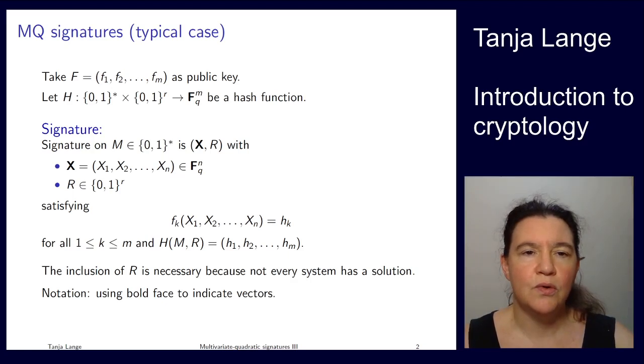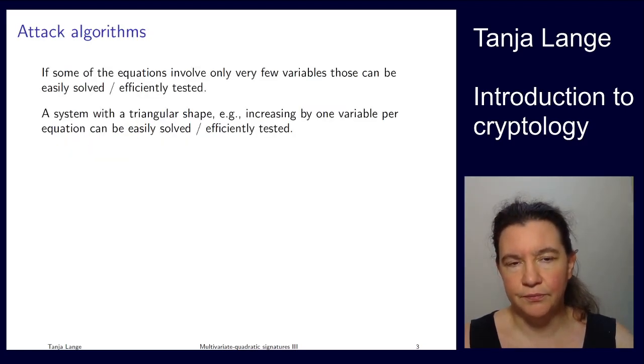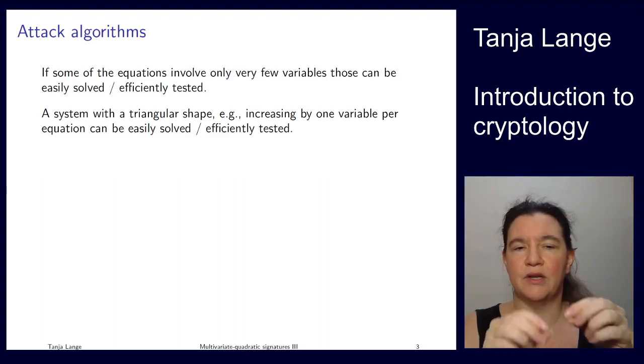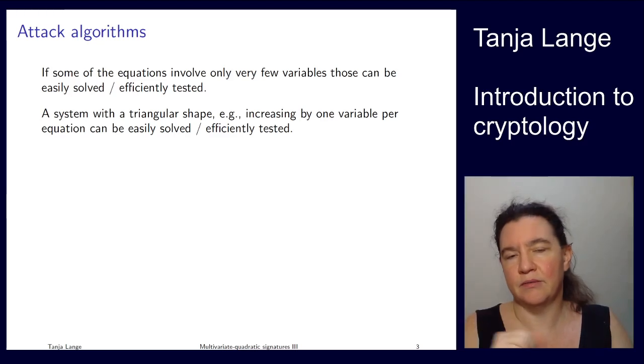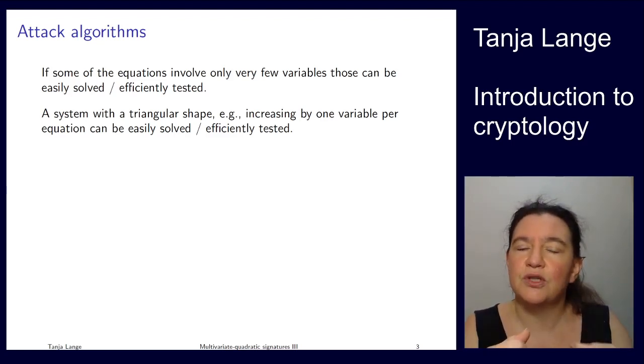Let's first go into what cases are easy to attack. This is relevant in order to know how to attack systems but also to figure out how systems could be easier to solve. If you have something like a very triangular system where you have an equation in just one variable, like x₁² is something, well it's a quadratic equation. If it's a binary field it's super easy to solve. Or if it's just two variables, you have a quadratic dependency between those but you can just fix one and therefore compute the other.